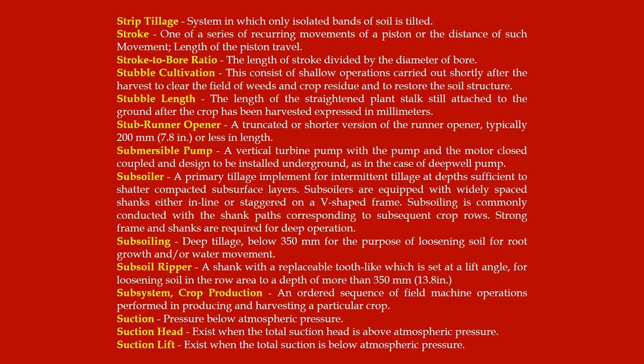Stub runner opener: a truncated or shorter version of the runner opener, typically 200 mm (7.8 inches) or less in length. Submersible pump: a vertical turbine pump with the pump and motor close-coupled and designed to be installed underground, as in the case of a deep well pump.